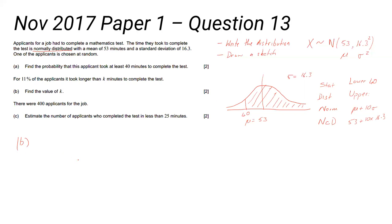Standard deviation 16.3, mean 53, and a normal distribution curve. It says 11% of the applicants took longer than k minutes to complete the test. Where's k going on this graph? We don't know where k goes on this graph. What we do know is the graph is symmetrical, so there's 50% on the left hand side of the mean and 50% on the right hand side or above the mean. If we know it's only 11% who took longer, we're looking at the longest 11%. We know that 11% is going to be somewhere down here. So we've got this region here, so that is 11% or 0.11.